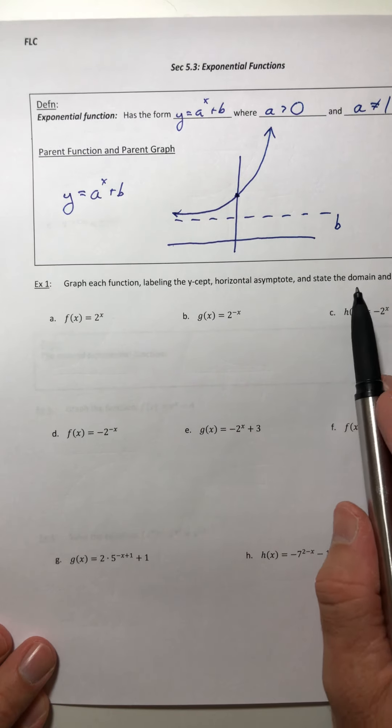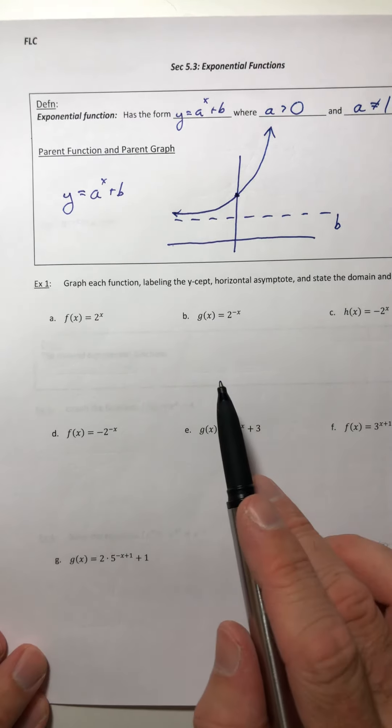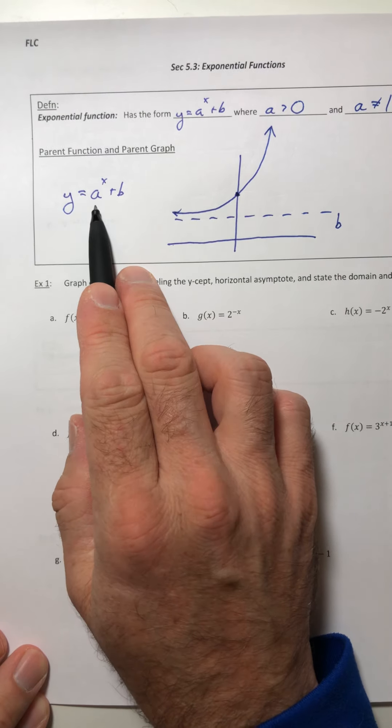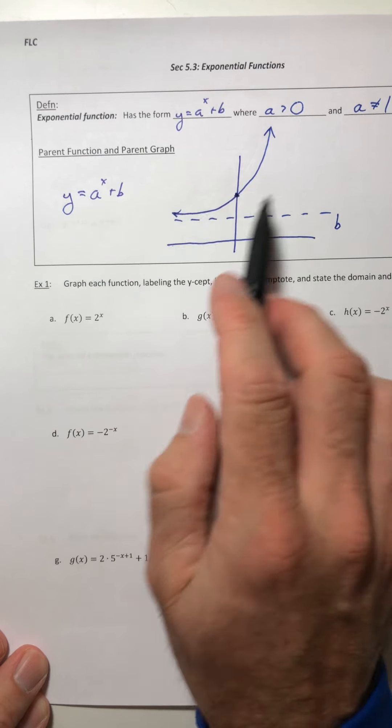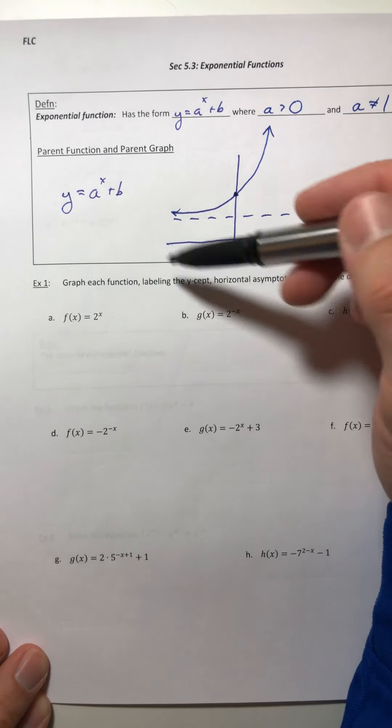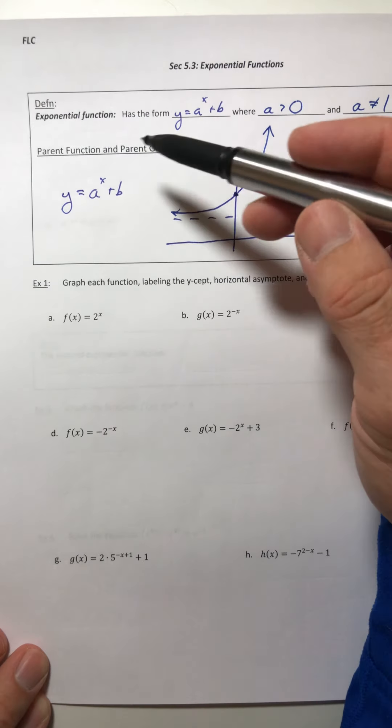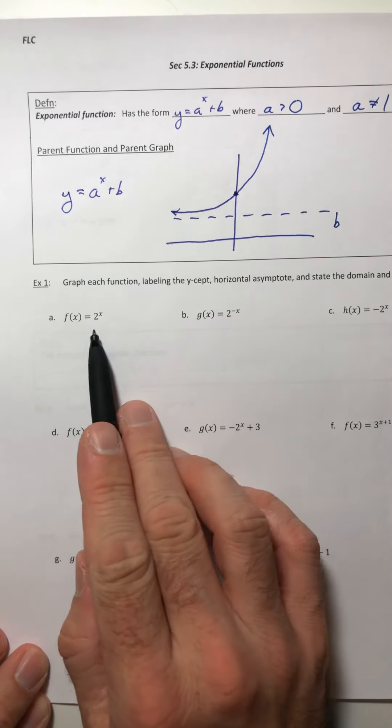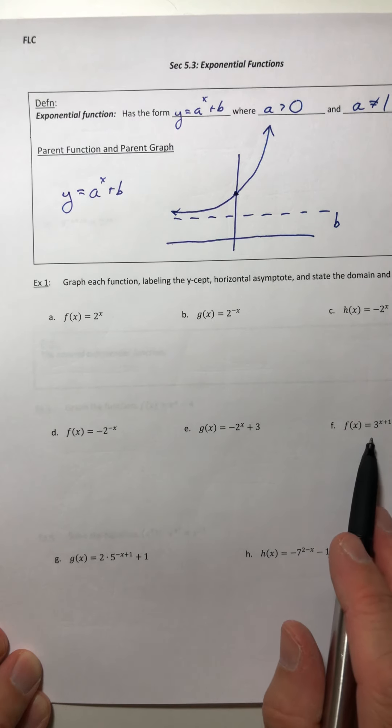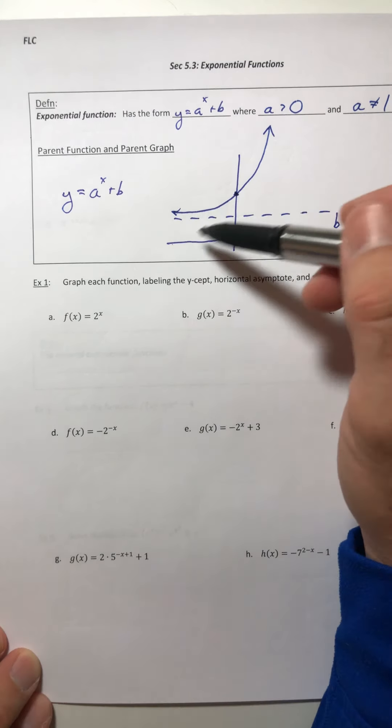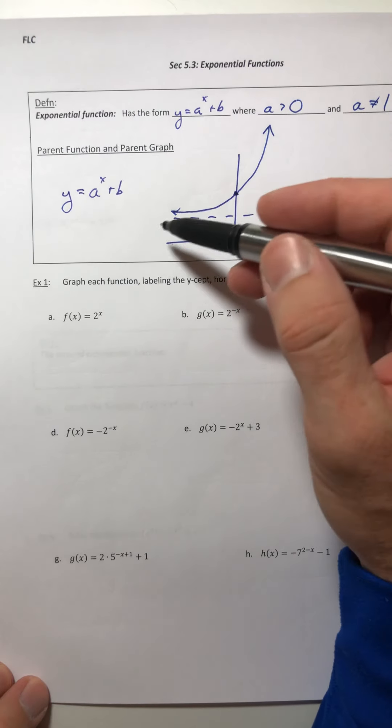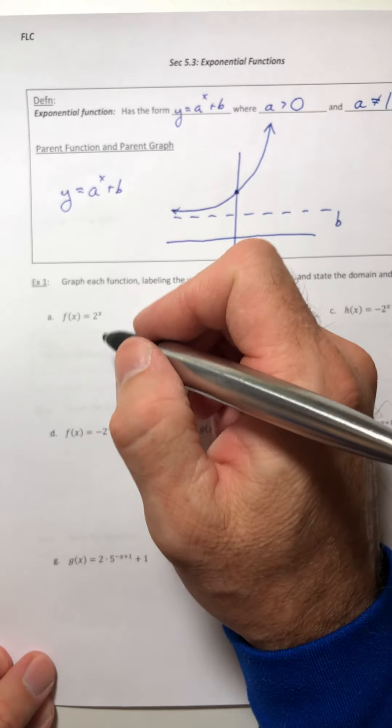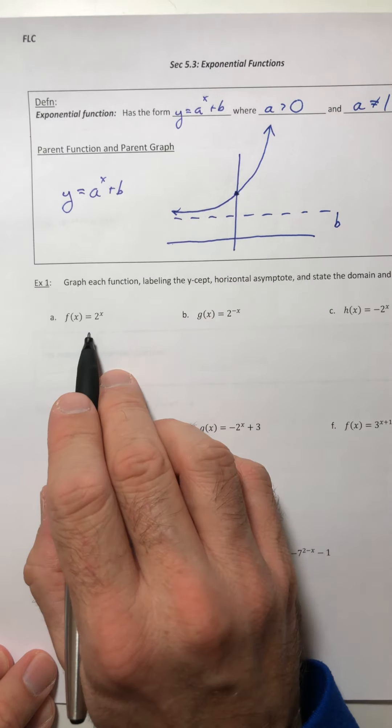2 to the x. Also, it doesn't matter what the base value is for these because they're just sketches. If we were actually plotting points and doing things to scale on graph paper, then there is going to be a difference if this is a 2 versus if it's a 7 or a 3. But for now they're just sketches, so as long as you have the right shape with the right data, that's good enough.